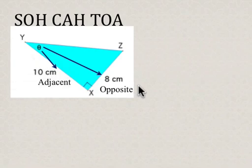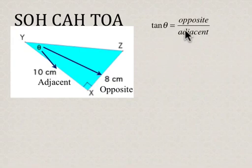What we're going to do here is use tangent because from SOH CAH TOA, tan is opposite over adjacent. We're going to sub in for tan theta is 8 over 10.